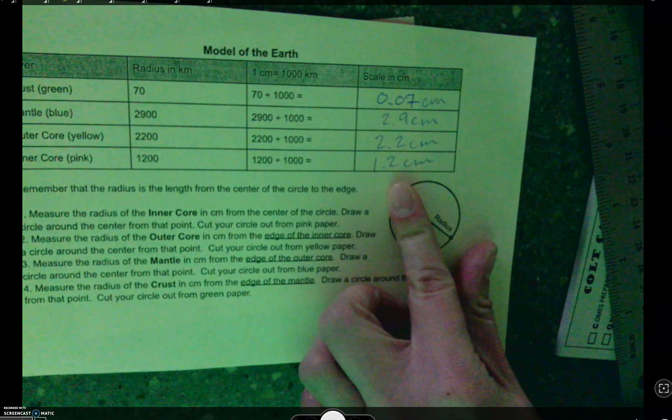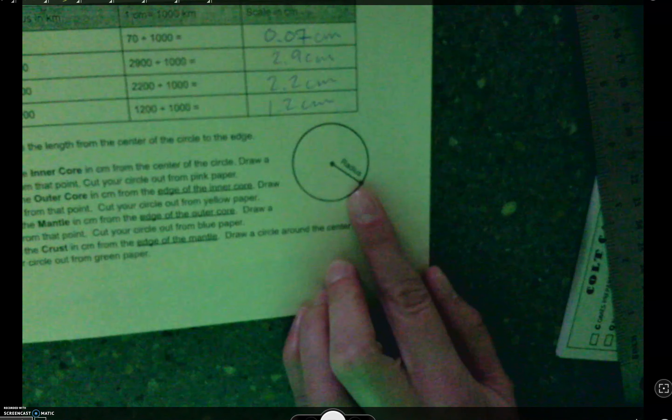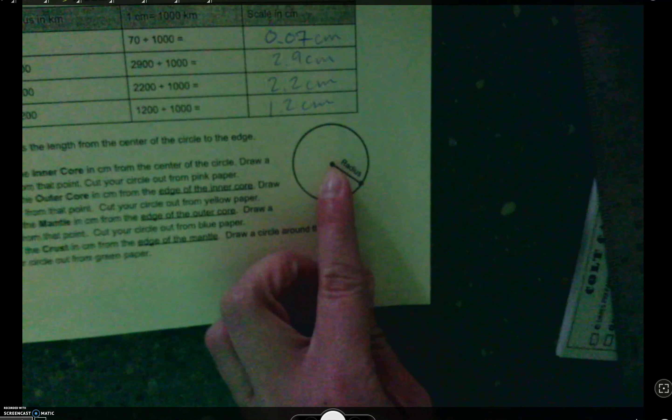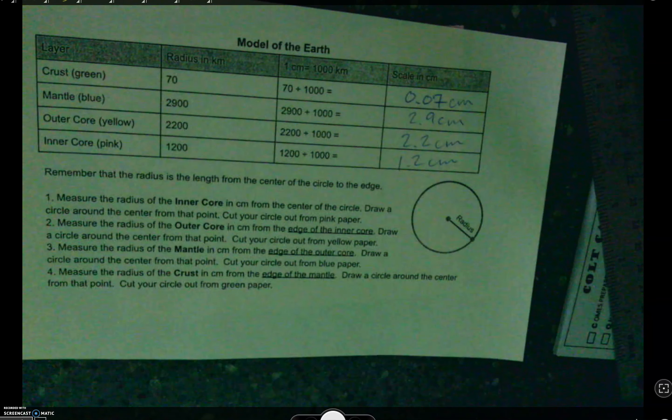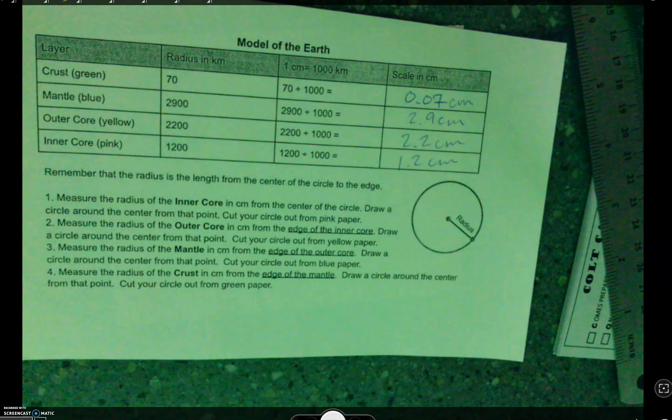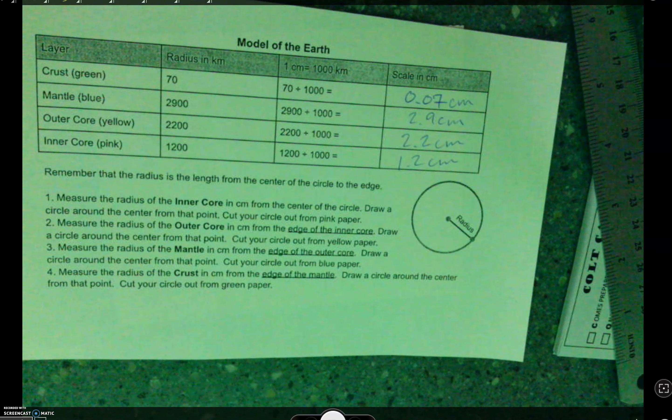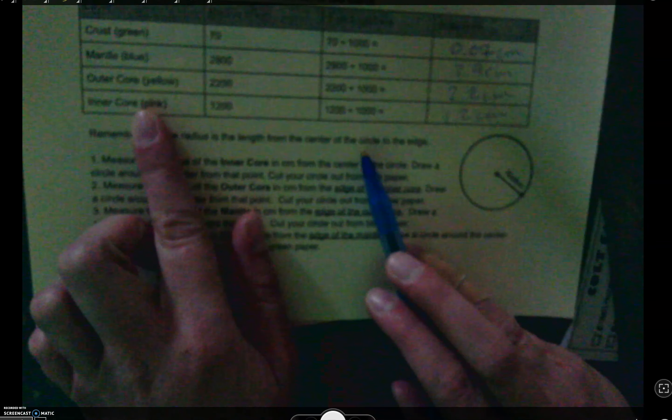So this is going to be the radius of our circle, okay? A radius, you guys already have learned in math probably, is from the middle of the circle to the edge. That's a radius, okay? So we've got the instructions down here. Our first instructions, step one, are to measure the radius of the inner core in centimeters from the center of the circle. We're going to use pink paper for our inner core, okay? So you're going to get a little piece of pink paper, measure the radius from a dot in the middle of the pink paper. Then you're going to draw a circle around the center. Let me show you what I mean by that. Oh, and by the way, the inner core is at the bottom, so we're actually starting at the bottom. So if you can make a star by your inner core measurement to show you that that's where you're going to start. Because sometimes people get confused. Sometimes people get confused and try to start on the crust measurement, but we're starting on the inner core measurement, okay?